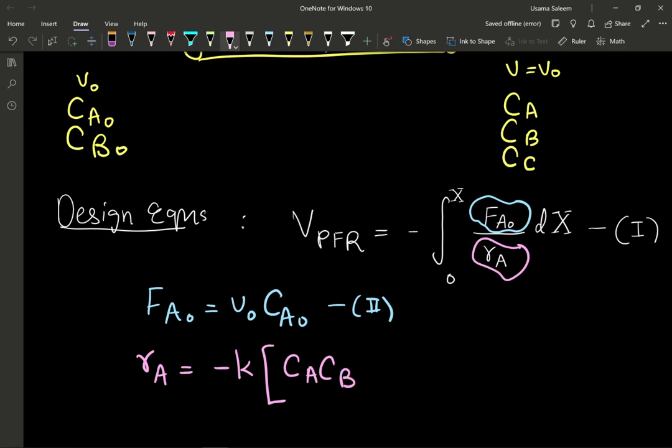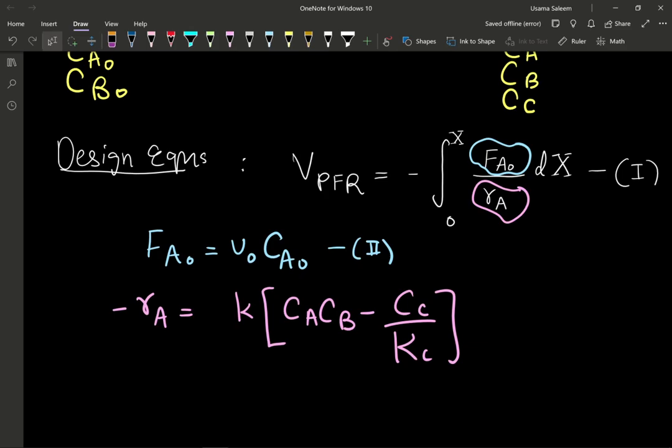Equation two, good. And the rate expression was just, the rate expression was negative K times C_A, C_B, hold up, one second. I'll put the negative here first, minus C_C over the equilibrium constant. And we've done this before, we've done this before. So the r_A, this is equation four.